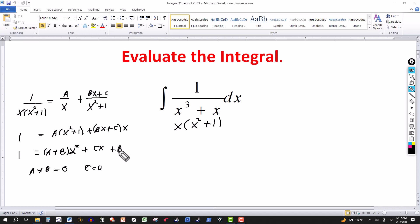The A is a constant on the right side, and the only constant on the left side is 1. So that tells me that A has to be 1. So C is 0, A is 1. But I know that A plus B has to be 0. So since A is 1, then that tells me that B has to be negative 1.